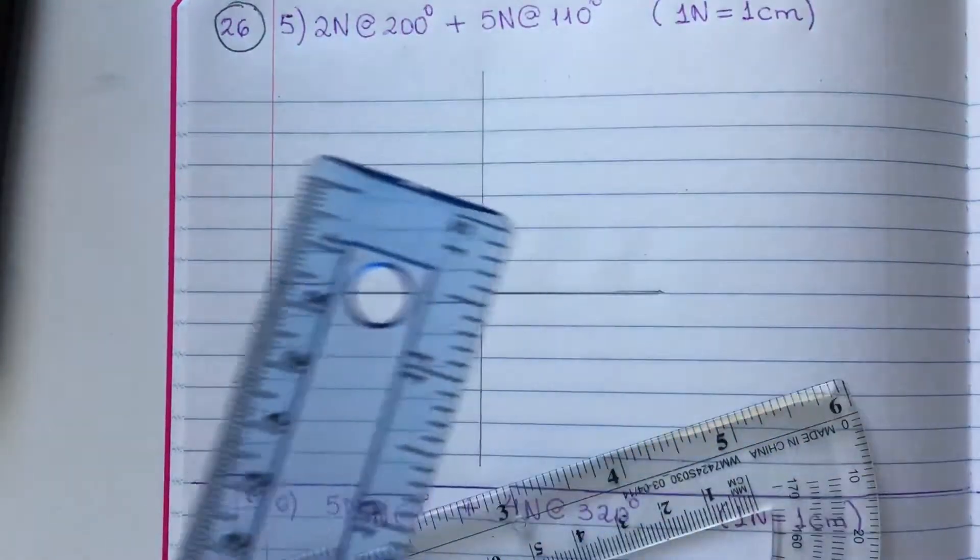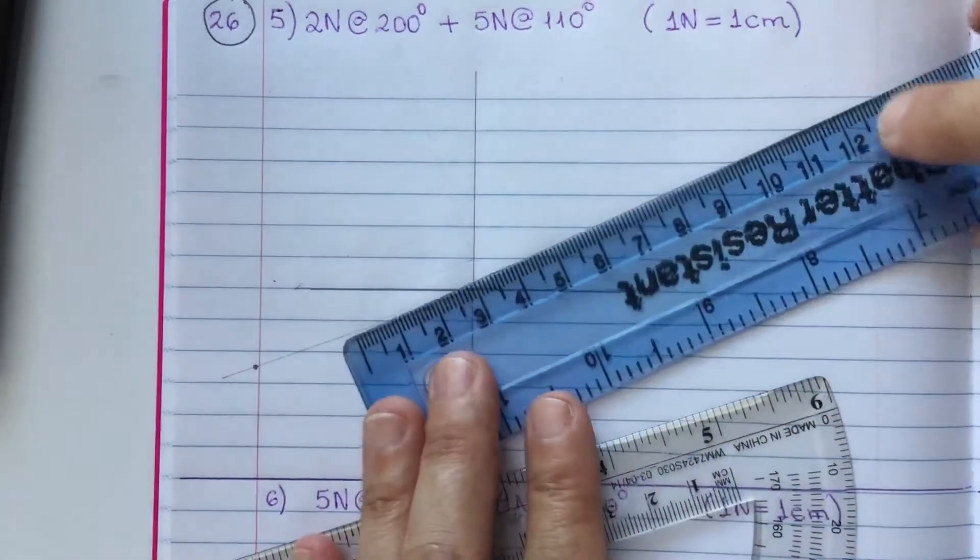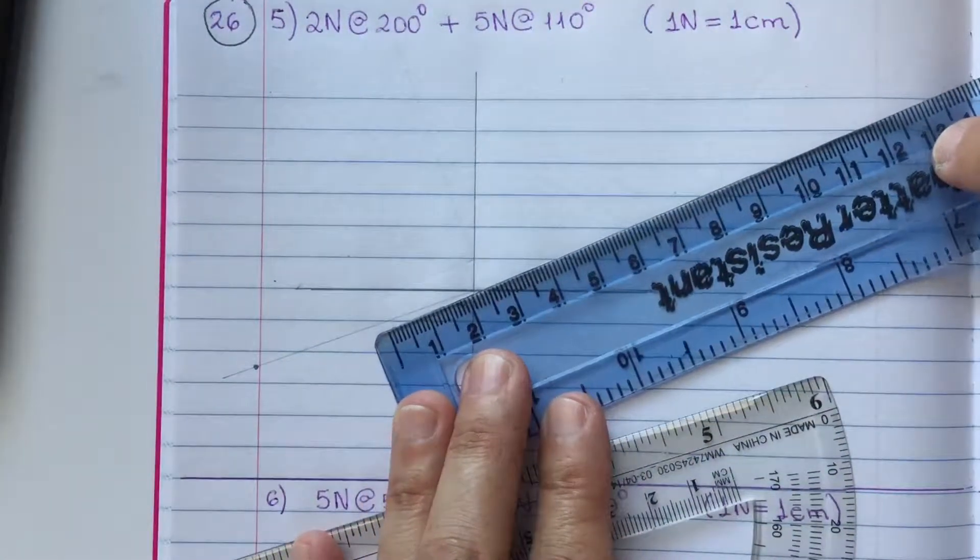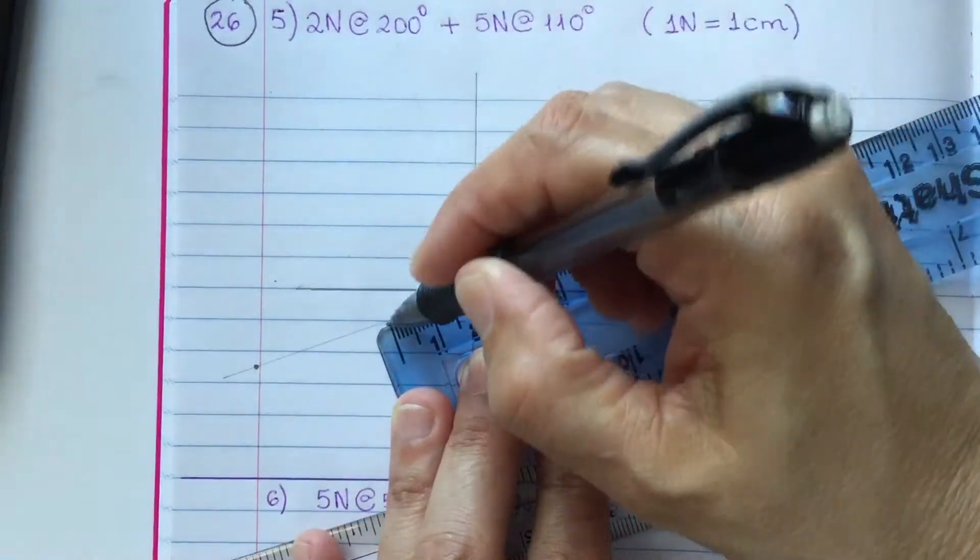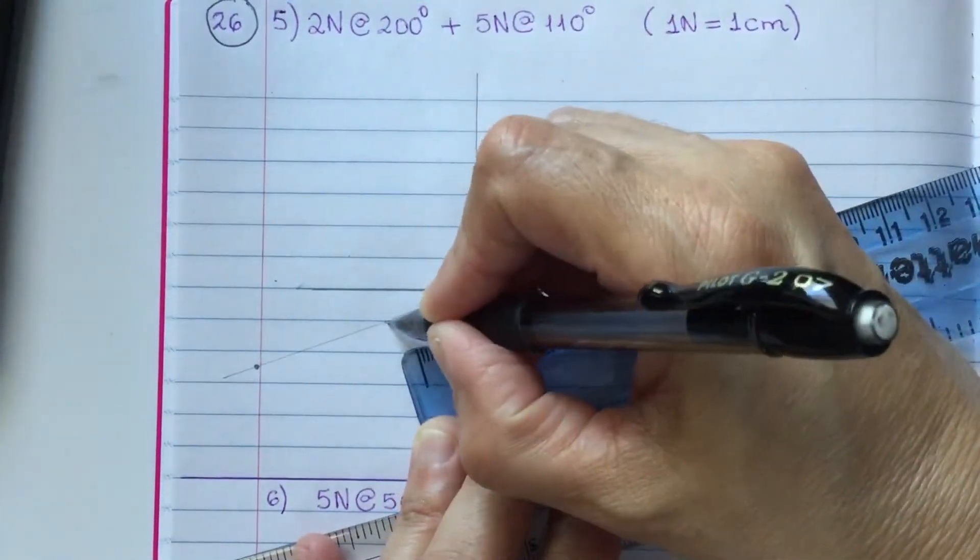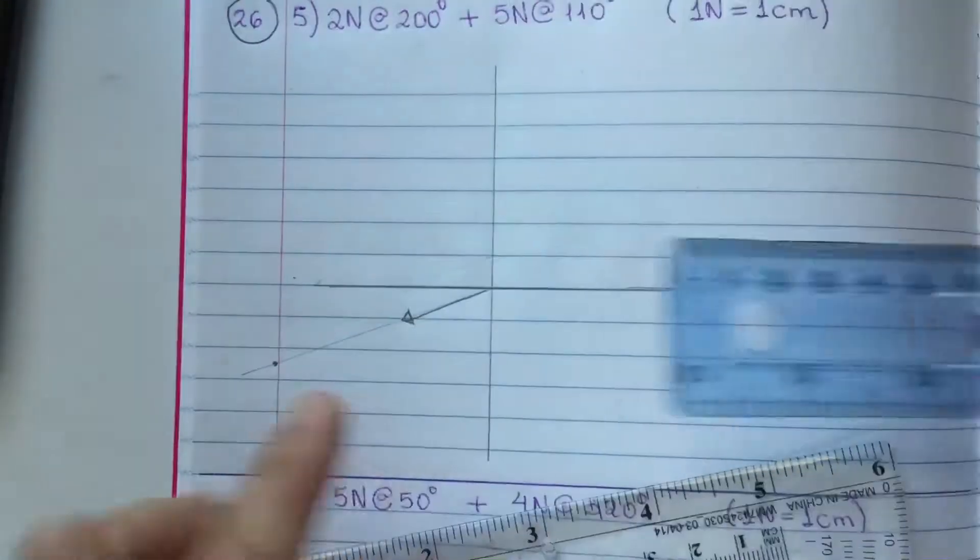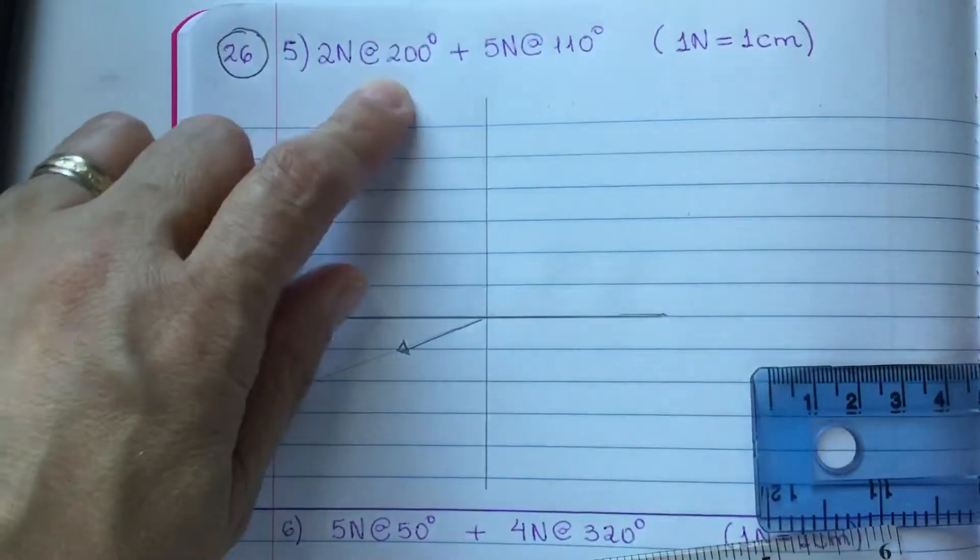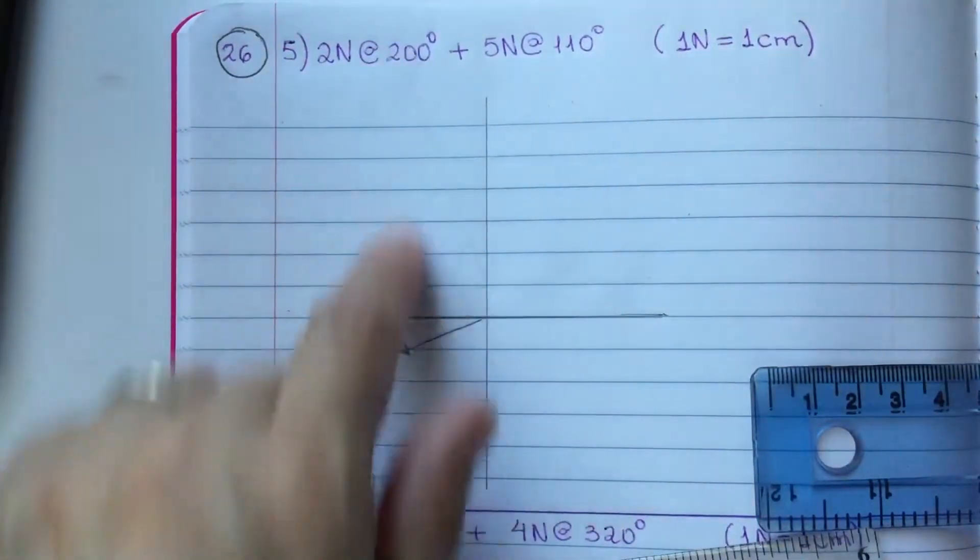So, you are going to draw two centimeters using a ruler. So, you draw the first vector, two newtons at 200 degrees.